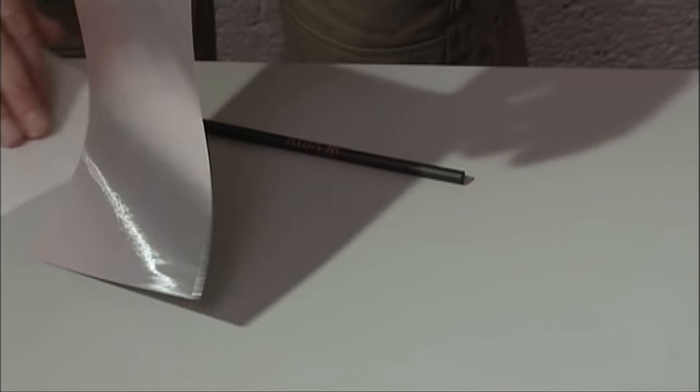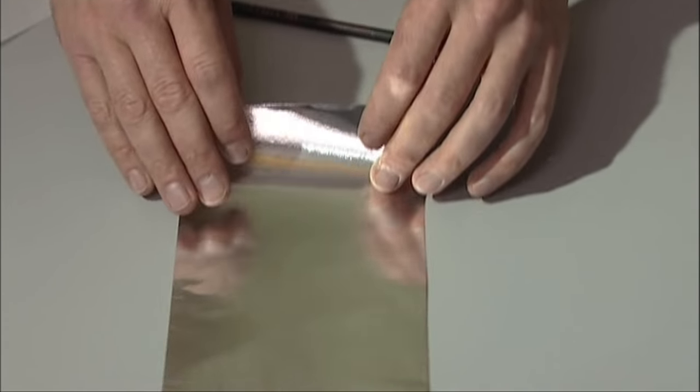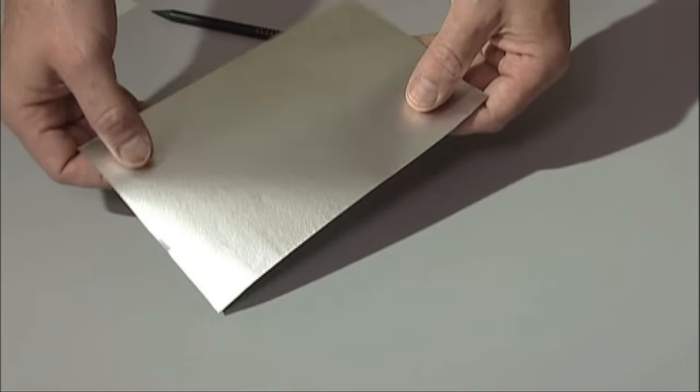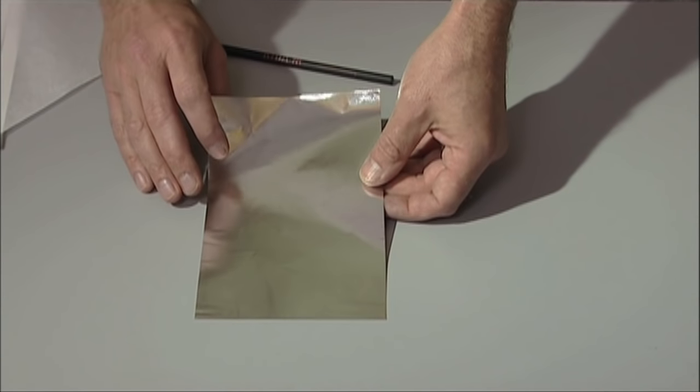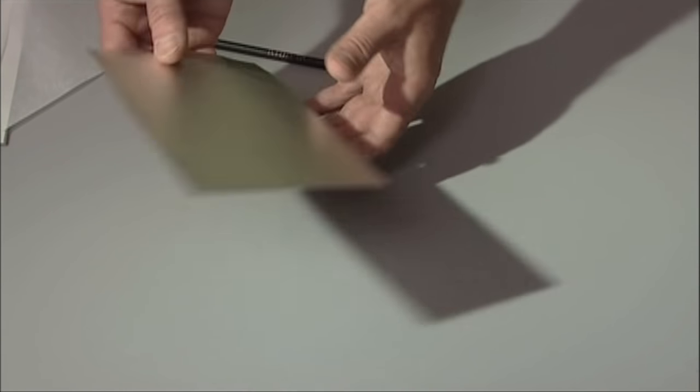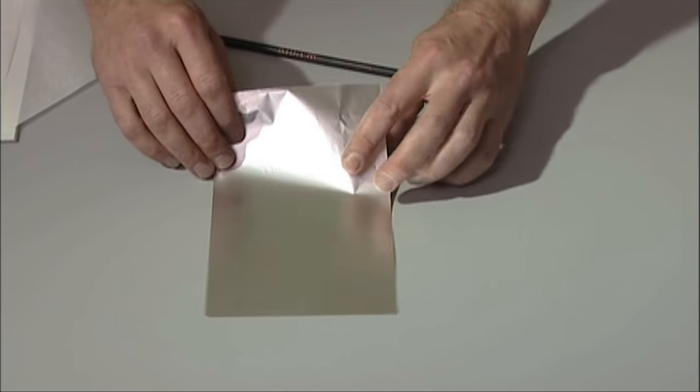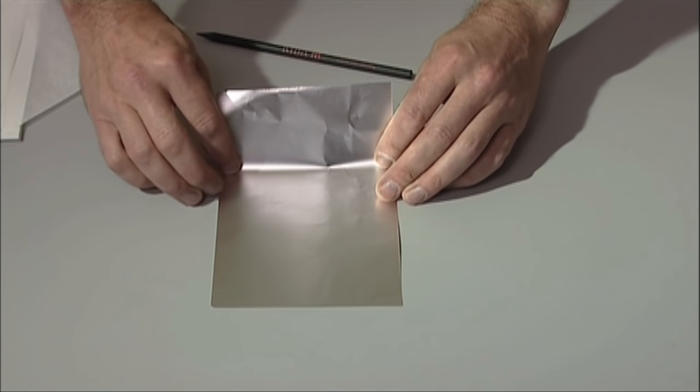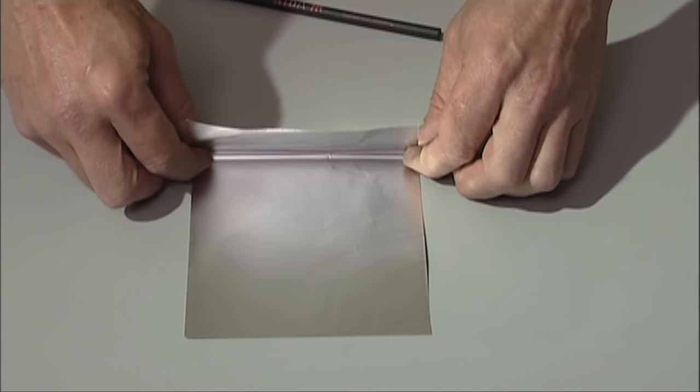So the second pipe to demonstrate is a 90 degree pipe. Again, it's not too critical which side of the foil you use, but I'll do it so that the shiny side of the foil is on the inside face of the pipe.